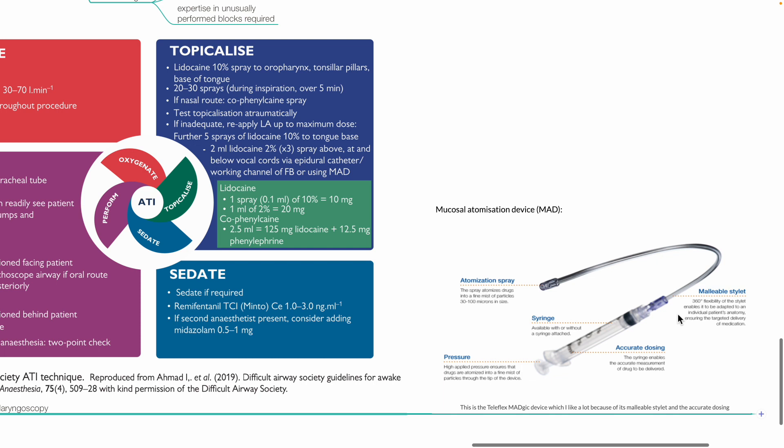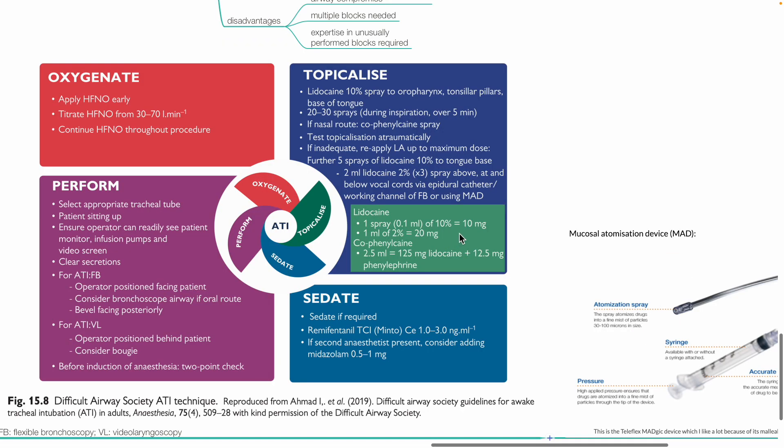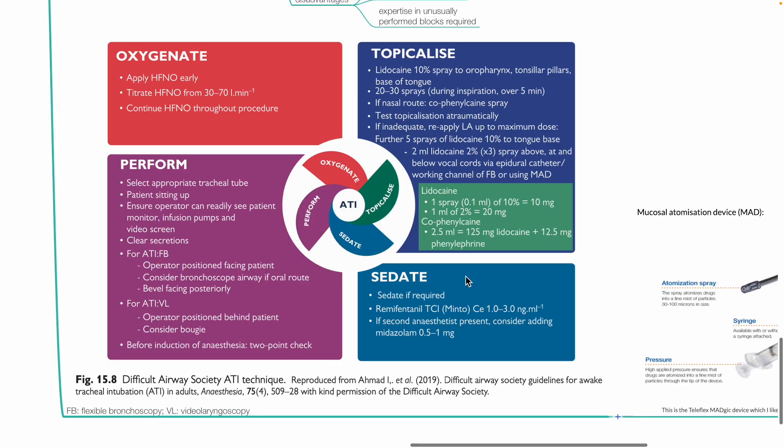It has a malleable stylet of 360 degree flexibility to enable it to be adapted to the patient's anatomy, ensuring targeted delivery of medication. This is attached to a syringe to contain medication. One spray of lidocaine 10% is equivalent to 10 mg of lidocaine. 2.5 mL of cophenylcaine is equivalent to 125 mg of lidocaine and 12.5 mg of phenylephrine. Sedate if required with remifentanil TCI Minto model. Effect site concentration target 1 to 3 ng per ml. If second anaesthetist is present, consider adding midazolam.